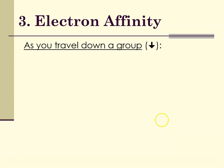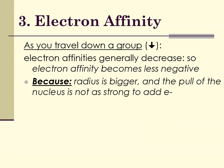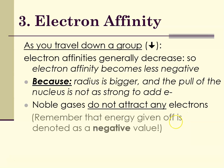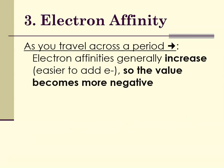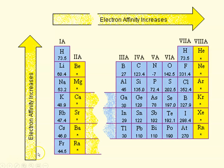As you travel down a group from top to bottom, electron affinities generally decrease — the electron affinity becomes less negative or more positive — because the radius is bigger and the pull of the nucleus is not as strong to hold on to an electron. Noble gases do not attract any electrons, so they don't have an electron affinity. As you travel across a period, electron affinities generally increase — the value becomes more negative — because the radius is smaller and the pull of the nucleus is stronger due to increased nuclear charge, making it easier to grab an electron. Electron affinity increases going up and across, like ionization energy.